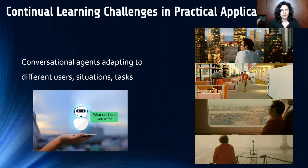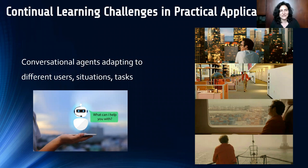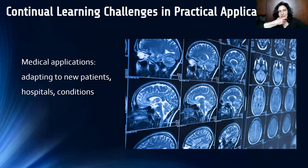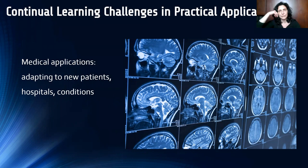Conversational agents need to adapt to new tasks and users — even the same person's needs change during the day — but a personal assistant or chatbot shouldn't forget what it learned before. In healthcare, a model trained on X-rays from one hospital can fail dramatically when applied to data from a different hospital, because it didn't learn causal or invariant features and relied on spuriously correlated ones.